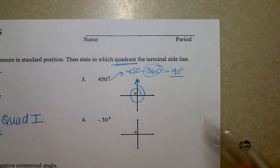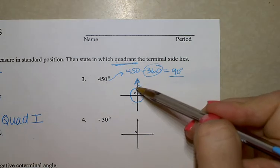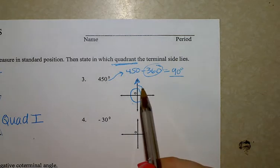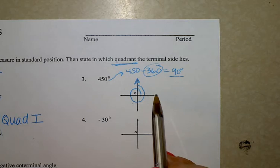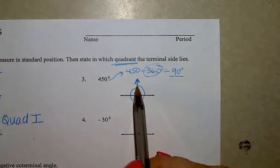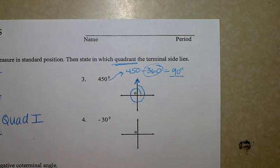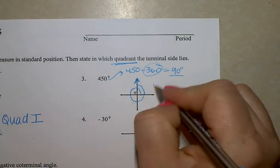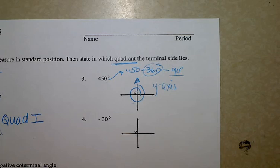The question was: is 450 degrees in quadrant one or quadrant two? The answer is neither. Think of having four rooms — the quadrants are the rooms and the axes are the walls. When you're at 90 degrees, you're on a wall, not in any room. The terminal side lies on what we'd think of as the y-axis — which we'll later call the sine axis.